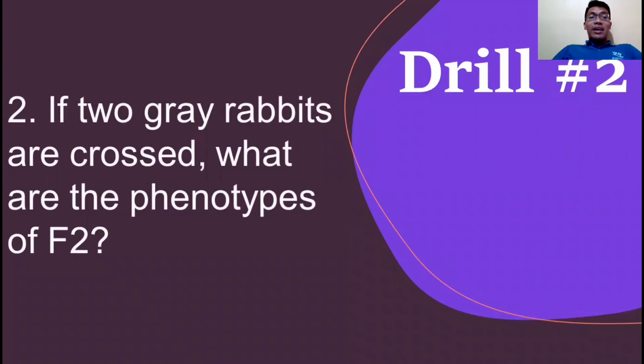Let's have drill number two. If two grey rabbits are crossed, what are the phenotypes of F2? Tingnan natin kung ano yung magiging result.